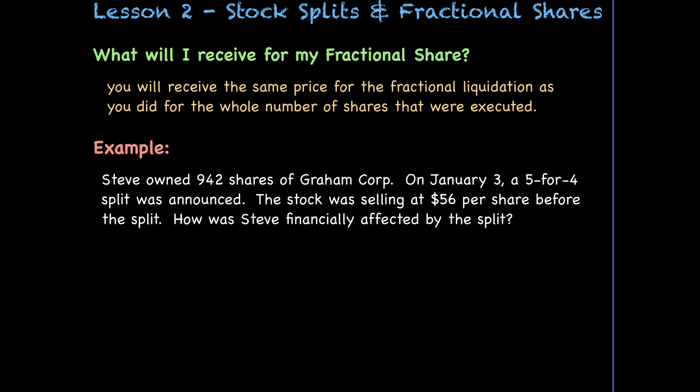For example, Steve owned 942 shares of Graham Corporation. On January 3, a 5-for-4 split was announced. The stock was selling at $56 per share before the split. We want to determine how Steve was financially affected by the split.